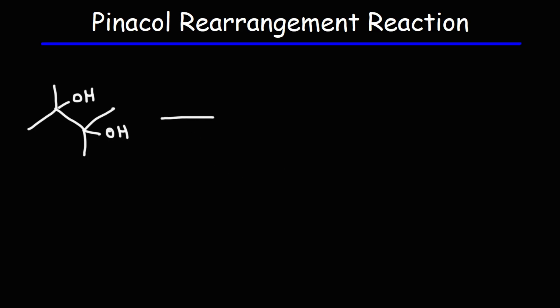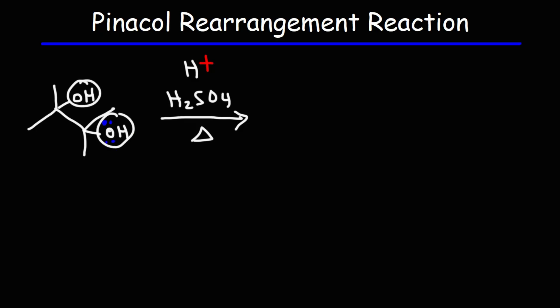We're going to react it with sulfuric acid and heat the solution. We can put H⁺ to represent sulfuric acid. Right now, the alcohol is a bad leaving group, but once we protonate it, we can turn it into a better leaving group. Both of these alcohols are tertiary alcohols, so it doesn't really matter which one we choose to react with the acid.